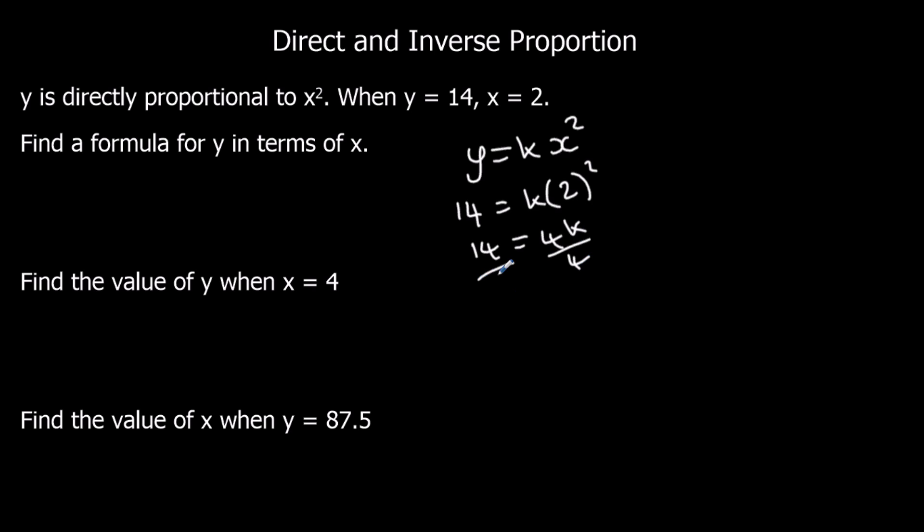Divide both sides by 4. So k is 14 over 4, which is 7 over 2, or 3.5. So y equals 3.5x squared. Find the value of y when x is 4. So we just substitute in 4. So 3.5 times 4 squared, which is 3.5 times 16.